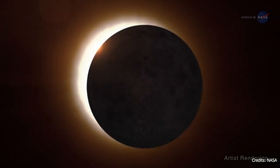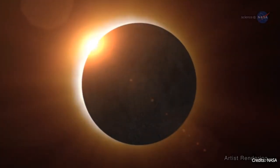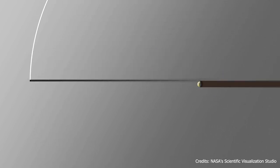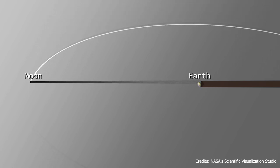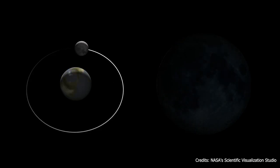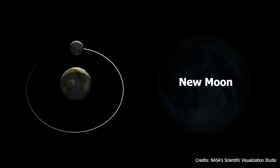A solar eclipse happens when the Moon comes between the Earth and the Sun and fully or partially blocks the sunlight from reaching the Earth. Solar eclipses can occur only during the New Moon phase.